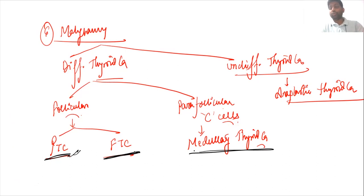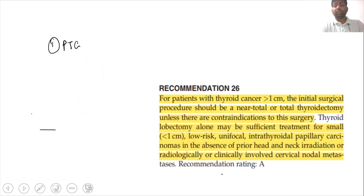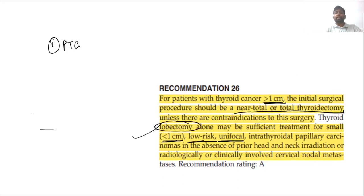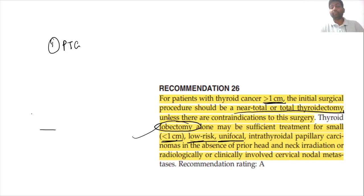For papillary thyroid cancer, the ATA guideline recommends that if the size is more than 1 centimeter, we go for near total or total thyroidectomy. If the size is less than 1 centimeter and the patient has a low-risk unifocal tumor, thyroid lobectomy alone can be considered. One centimeter is the key cutoff size per ATA guidelines.